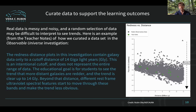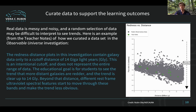We have also curated our data somewhat to support the learning outcomes. You all know that real data is messy, and oftentimes there are complications that confuse what the general trend of the data might be. Here's an example of a redness versus distance plot where we've intentionally cut off the distance around 14 gigalight years, because after that point the trend becomes less obvious.